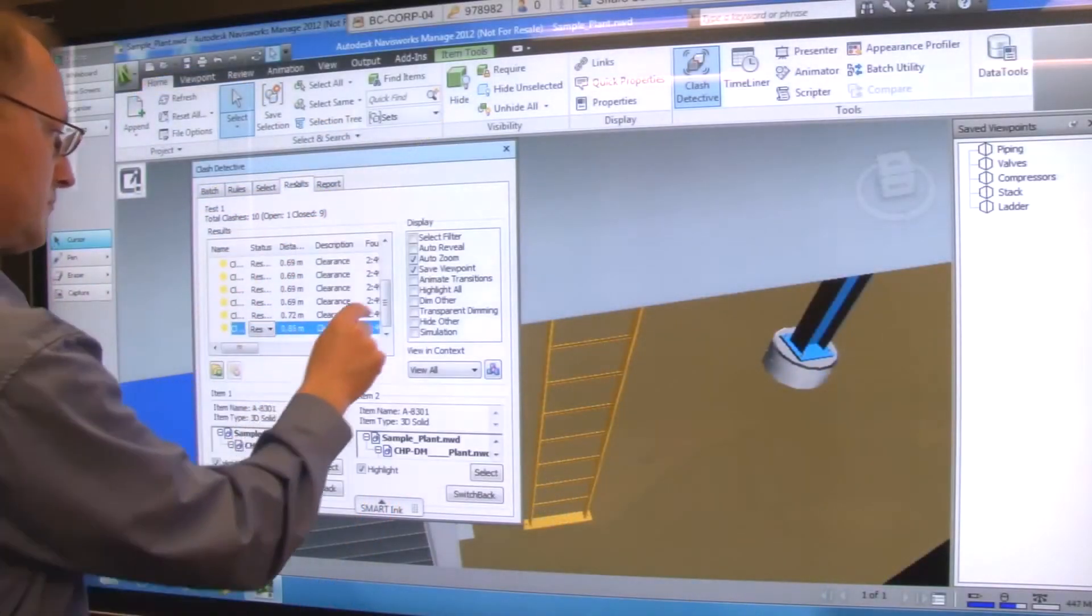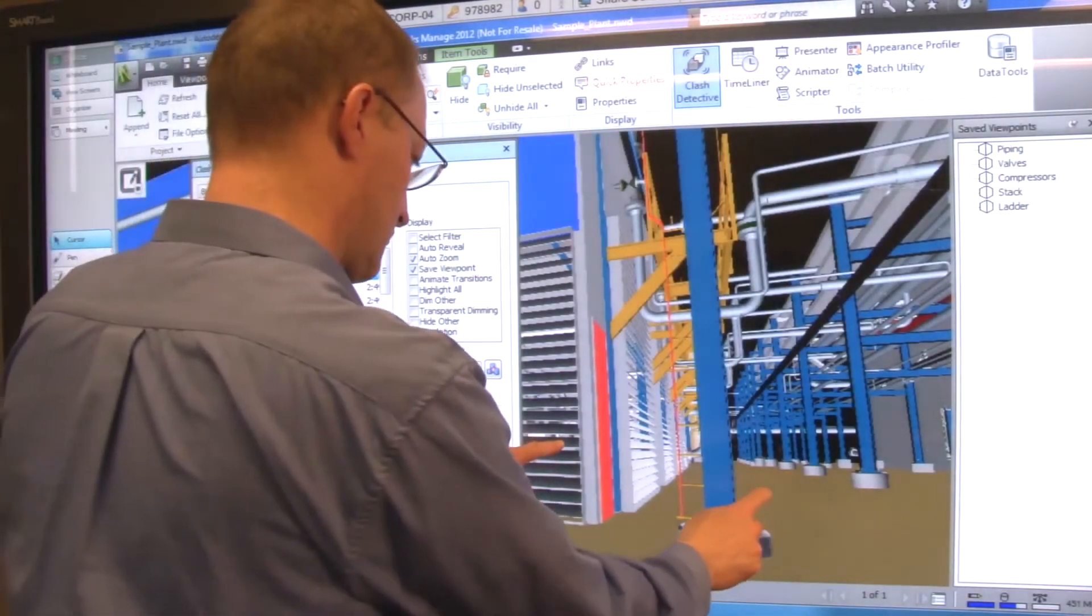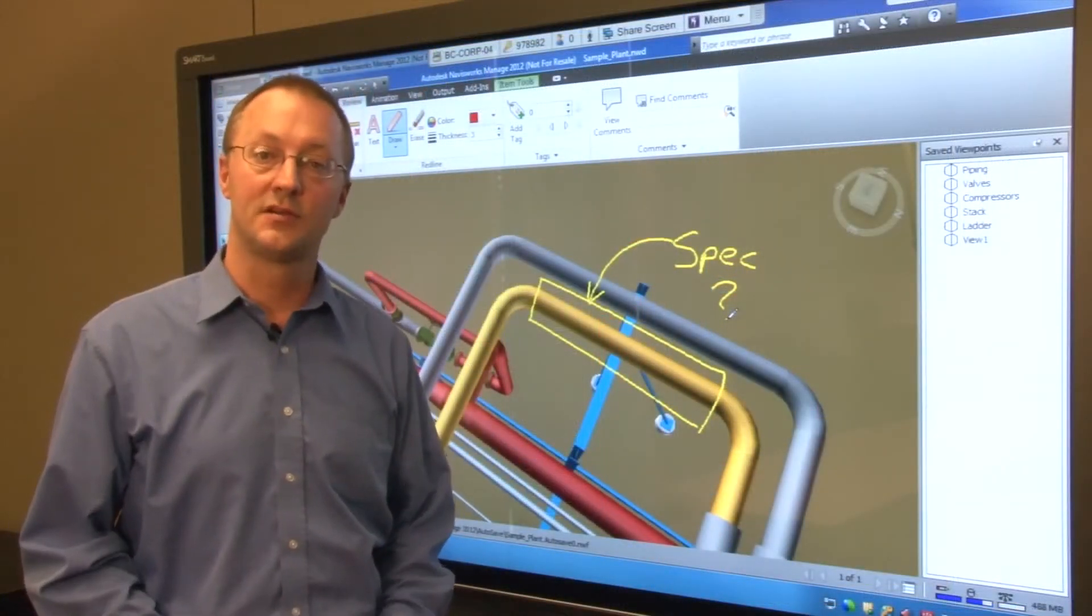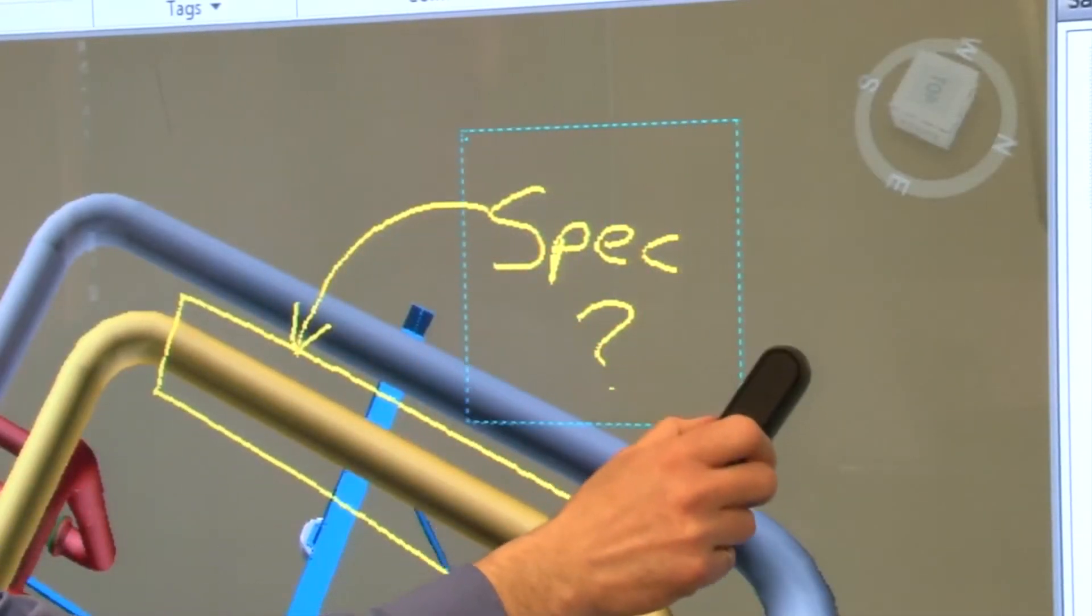You can use this same note capture capability when viewing and marking up Navisworks clash detection results. Use the pen tray eraser to erase any of your markups. The plugin maps it directly to your eraser tool.